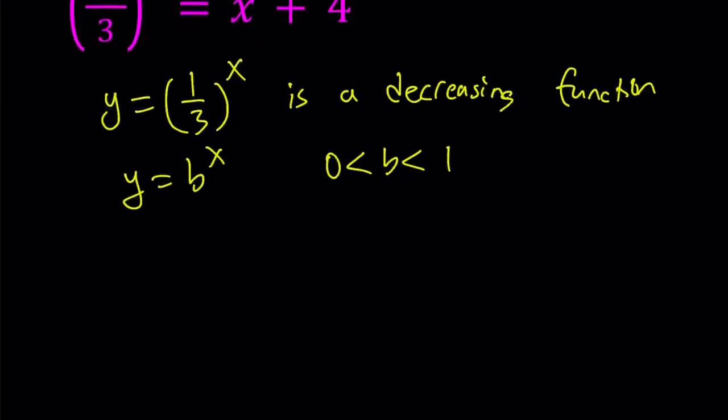So, in this case, our b which is 1 third falls in this interval. And you know that the graph is going to look like roughly something like this. As x approaches infinity, y is going to approach 0. As x approaches negative infinity, y is going to approach positive infinity. And it has a y-intercept at 0, 1. And no x-intercept because of the asymptote.